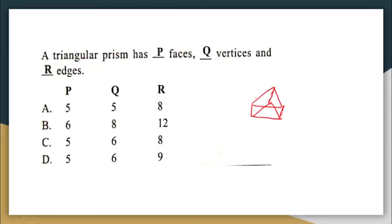A triangular prism has how many faces, vertices, and edges? A triangular prism has 5 faces. It has 6 vertices — counting: 1, 2, 3, 4, 5, 6. And it has 9 edges. You can draw a triangular prism and count to verify: 5 faces, 6 vertices, and 9 edges. The correct answer here is option D.